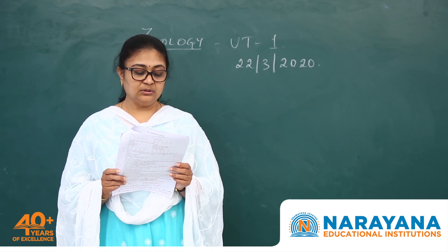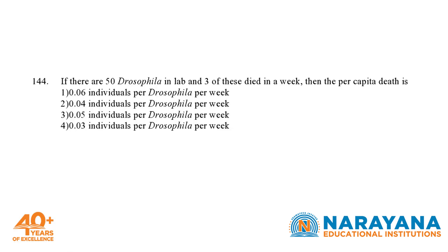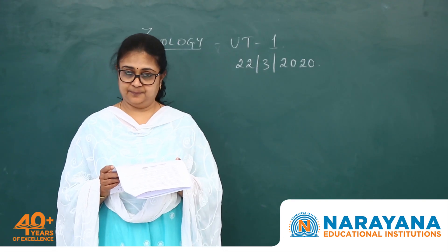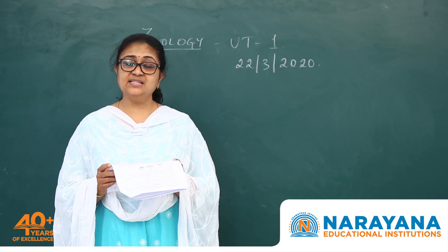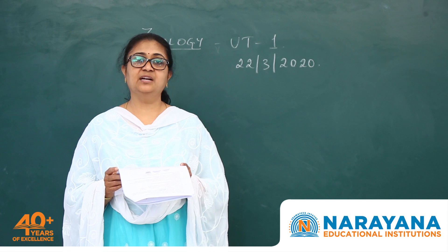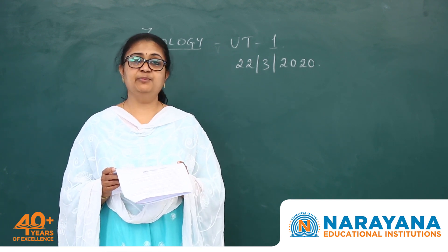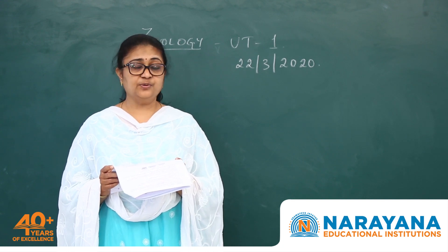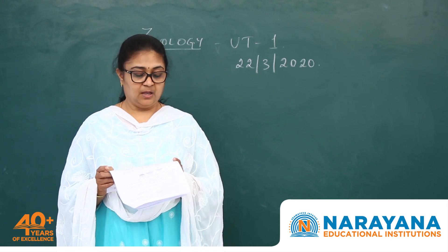Question 144: if there are 50 Drosophila in a lab and 3 of these died in a week, the per capita death rate is the number of deaths divided by the total number of individuals, so 3 divided by 50. The answer is 0.06 individuals per Drosophila per week, so the first answer is correct.